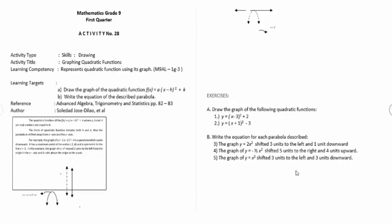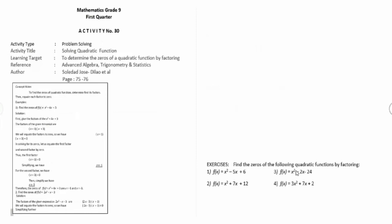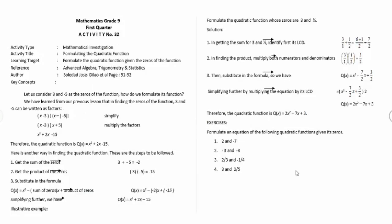Activity number twenty-nine. Activity number thirty. Activity number thirty-one. Activity number thirty-three: zeros of quadratic functions. Activity number thirty-three: formulating the quadratic functions.